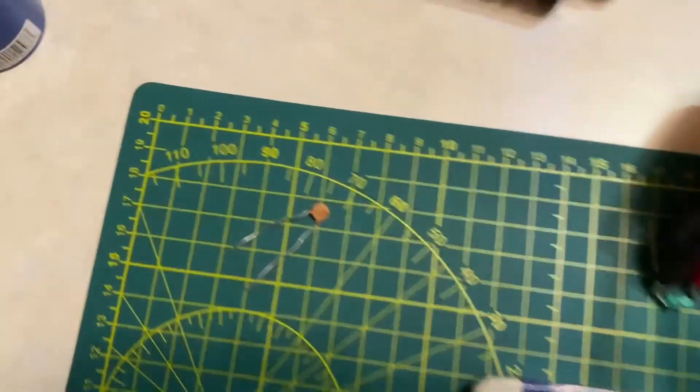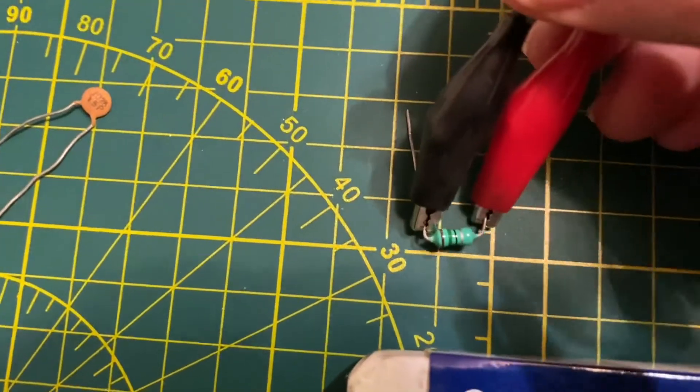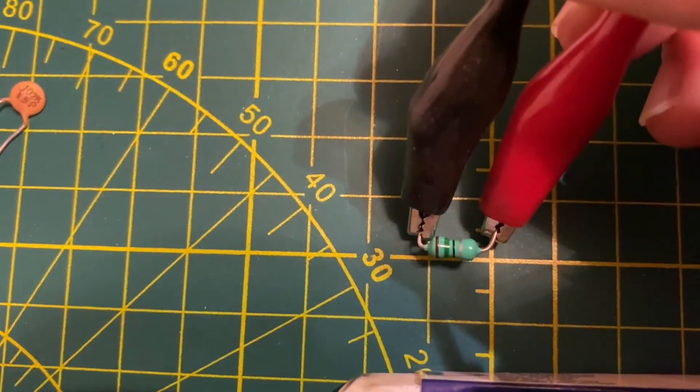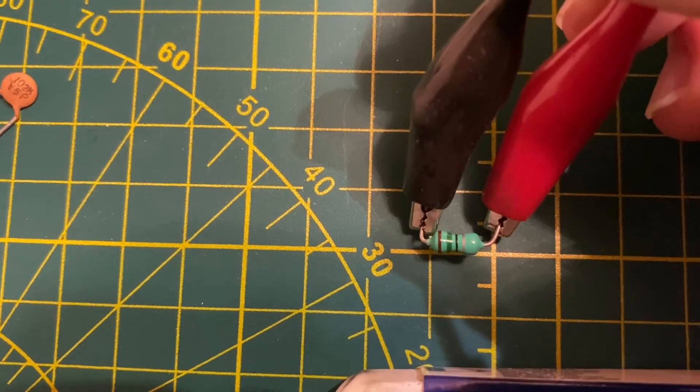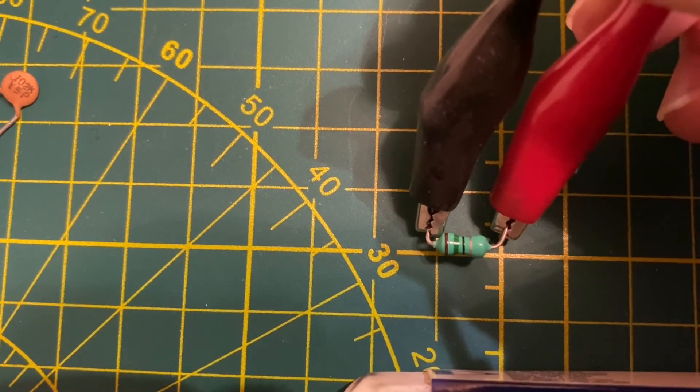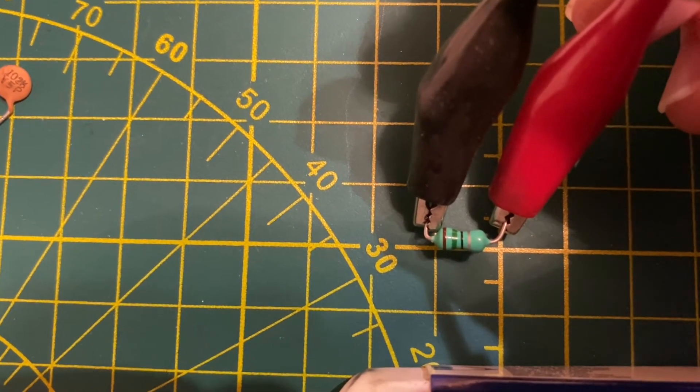The actual value of the inductor is—we can see a brown, a green, and a black. Brown is one, green is five, and black is a one multiplier, so 15 microhenries. What do you know, it worked!